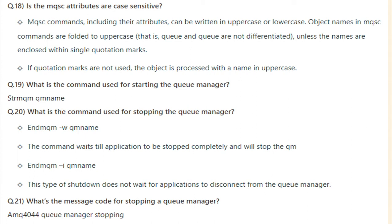What is the command used for starting a queue manager? The command is 'strmqm' followed by the queue manager name. What is the command used for stopping the queue manager? The command is 'endmqm -w' followed by the queue manager name — this waits for applications to stop completely before stopping the queue manager. The message code for stopping a queue manager is AMQ4044: Queue Manager Stopping.